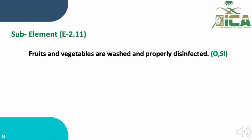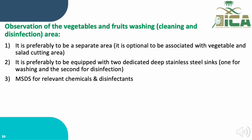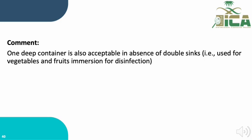Sub-element E.2.11 states that fruit and vegetables are washed and properly disinfected. This sub-element is evaluated through observation and staff interview. Observation requires checking the vegetable and fruit washing and disinfection area, which is preferred to be a separate area, ideally associated with the vegetable and salad cutting area, and equipped with two dedicated deep stainless steel sinks — one for washing and one for disinfection. We also observe the material safety data sheet for the chemical disinfectant used. One deep container is acceptable in the absence of a double sink.